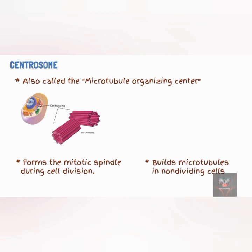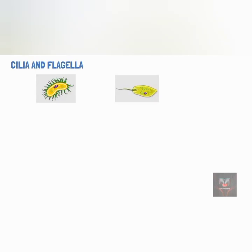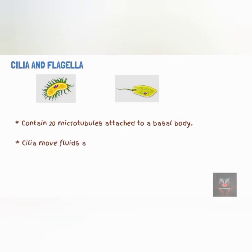Cilia and flagella are motile projections from the cell surface. Cilia are usually numerous and short, while the flagellum is usually single and longer. Both structures contain microtubules which are attached to a basal body. Cilia move fluid along the cell surface, while the flagellum usually moves an entire cell.